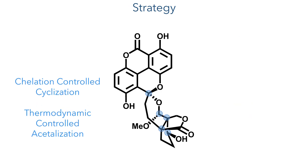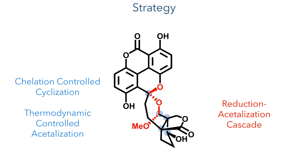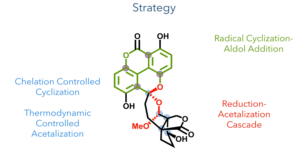To install the stereochemistry they would use a chelation-controlled cyclisation, and the bisacetalisation step would be done under thermodynamic control to favour one isomer. This reaction could be done as a cascade: the first step triggered by a reduction generating a hydroxyl group that undergoes intramolecular attack on a ketone to form a hemiacetal, and in the second step this hemiacetal undergoes another intramolecular addition forming the spirobisacetal linkage. The aromatic fragment would be formed using a radical cyclisation followed by an aldol addition.